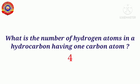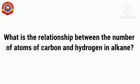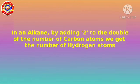Four hydrogen atoms. What is the number of hydrogen atoms in a hydrocarbon having two carbon atoms? It is six. So what is the relation between the number of atoms of carbon and hydrogen in alkanes? The number of hydrogen is obtained by adding two to double the number of carbon atoms.